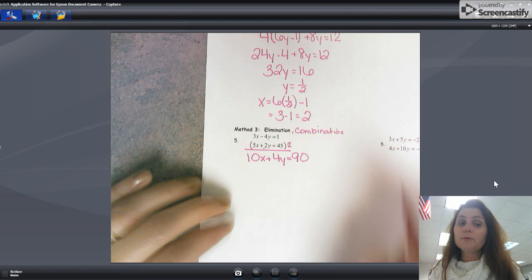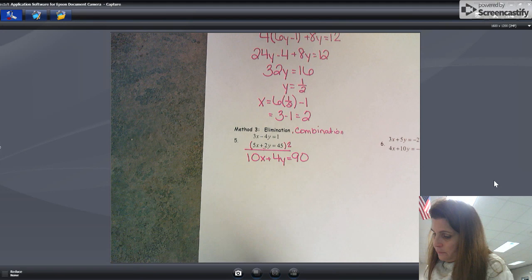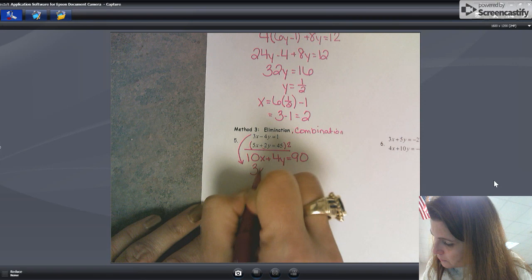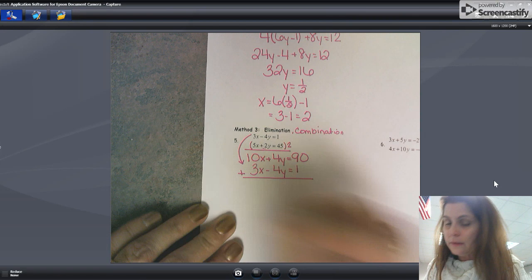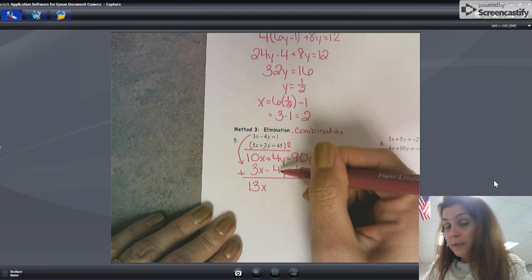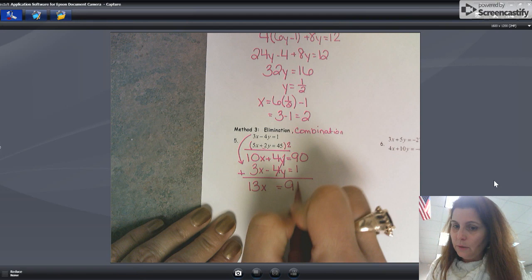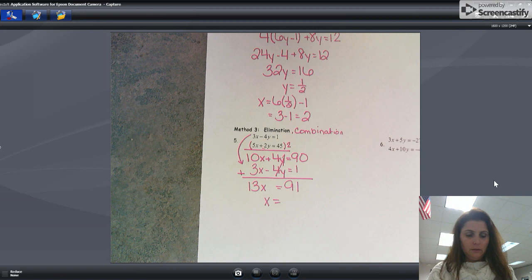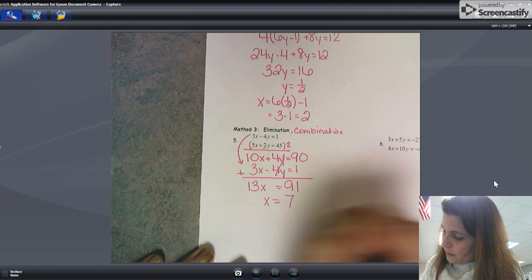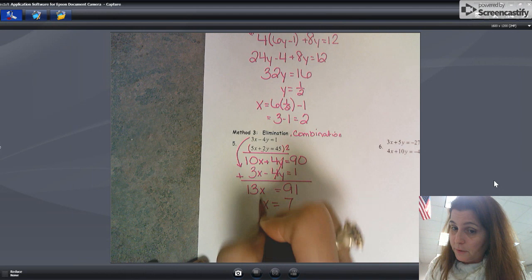And now I'm just going to bring this top equation down there and I'm going to add these up. 13x, look at that, 4y plus negative 4y gone, equals 91. So that x equals, I don't know, whatever 91 divided by 13 is, 7. Now take that and sub it in for x. So I'll take 3 times 7 minus 4y equals 1.